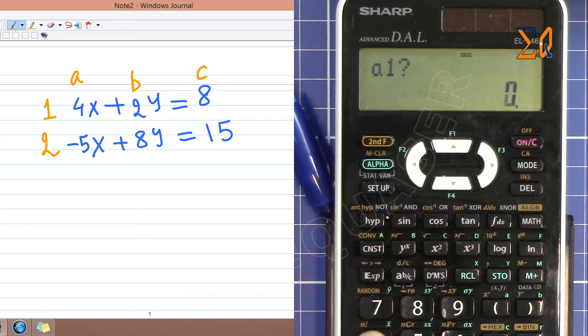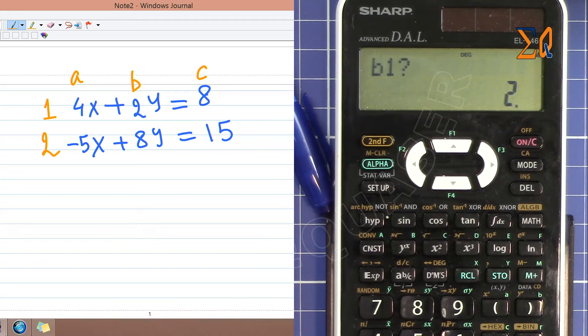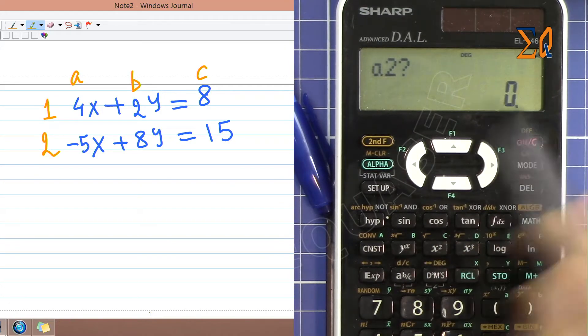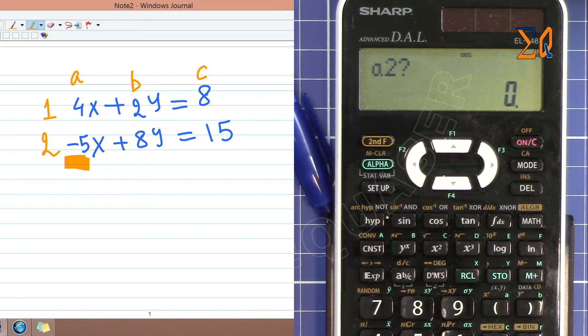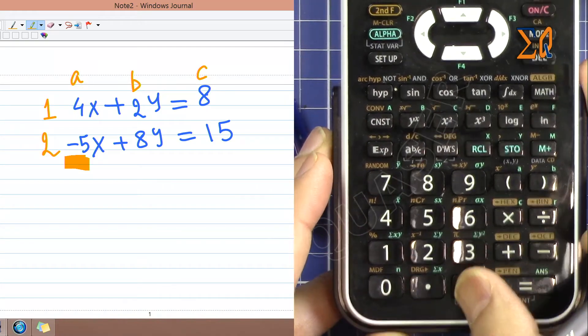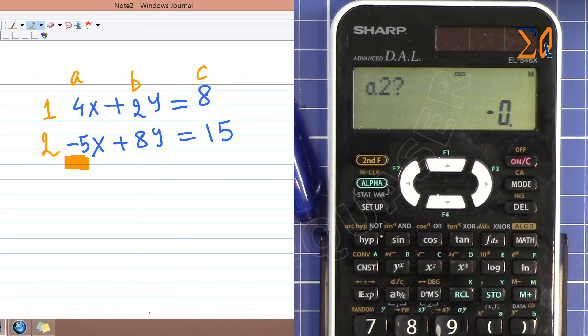Now a1 is 4, b1 is 2 as you can see here, and then c1 is 8. Once you're done it goes to a2, so a2 here is minus 5. I press this plus and minus here, minus 5 equal, and then 8 for b, and then 15 is c2.